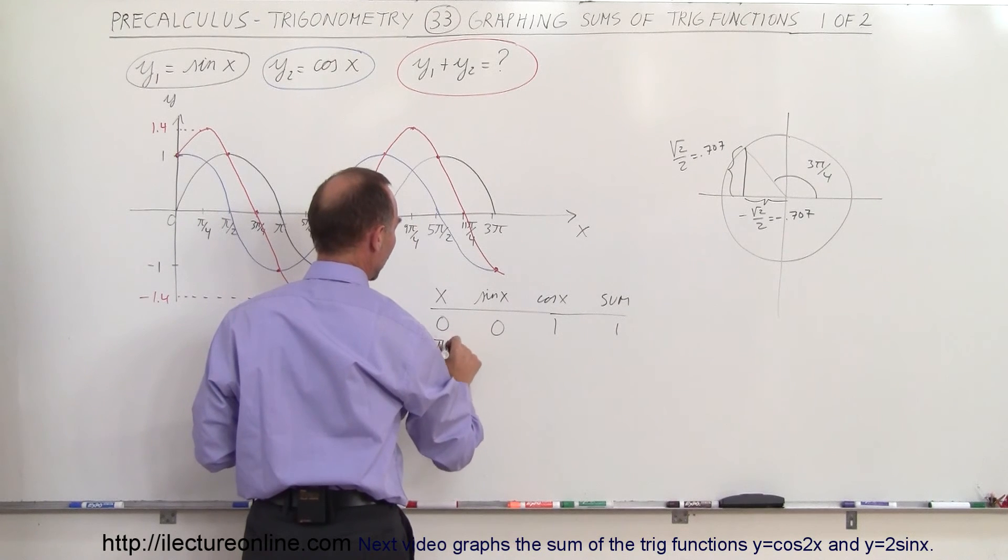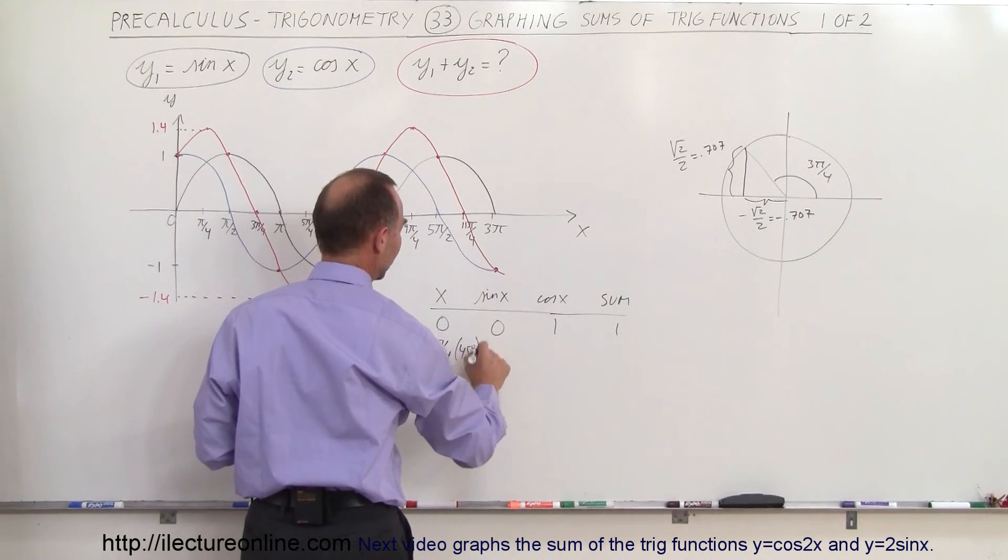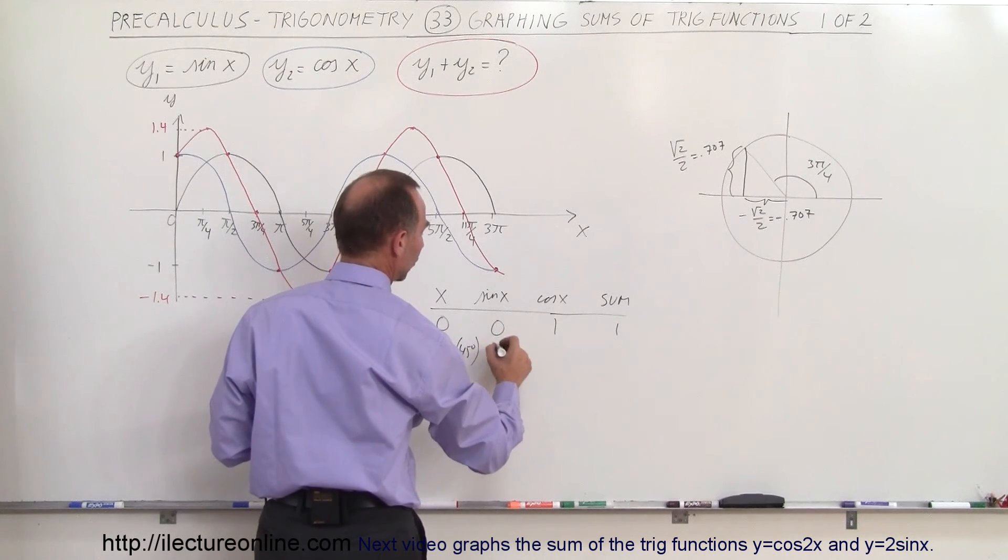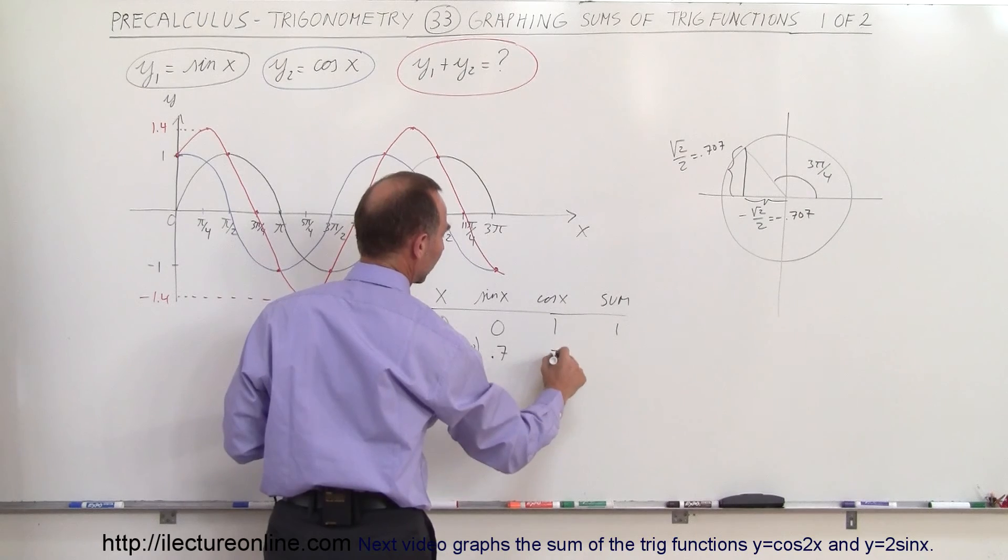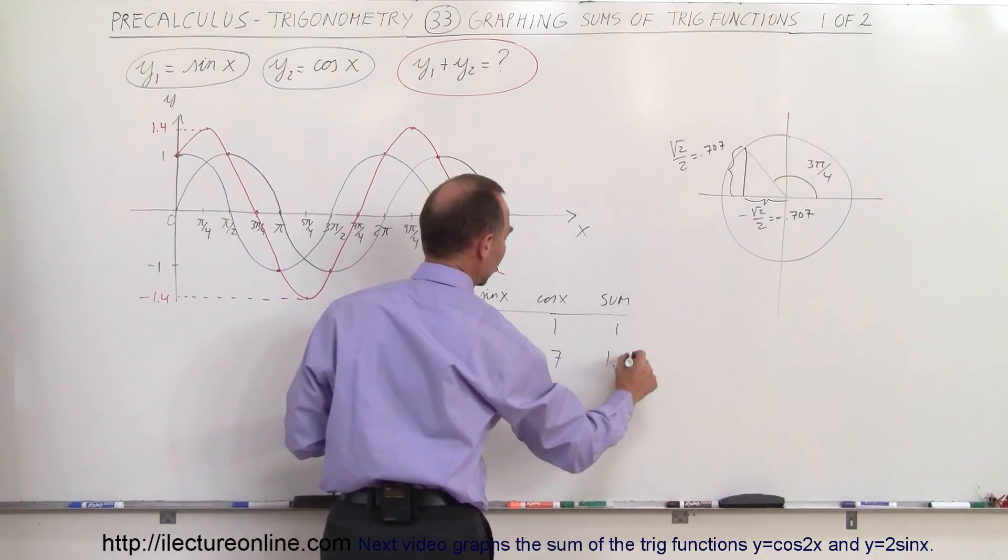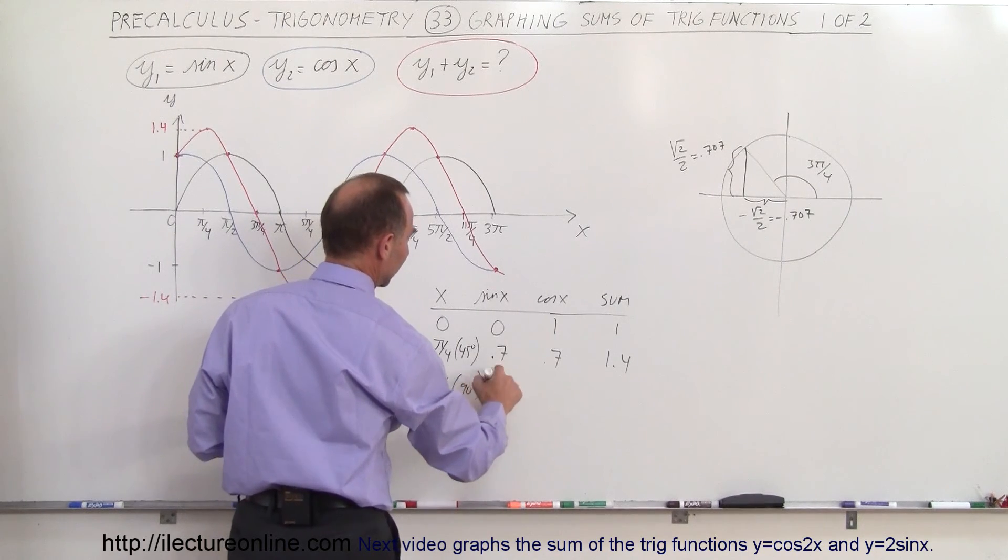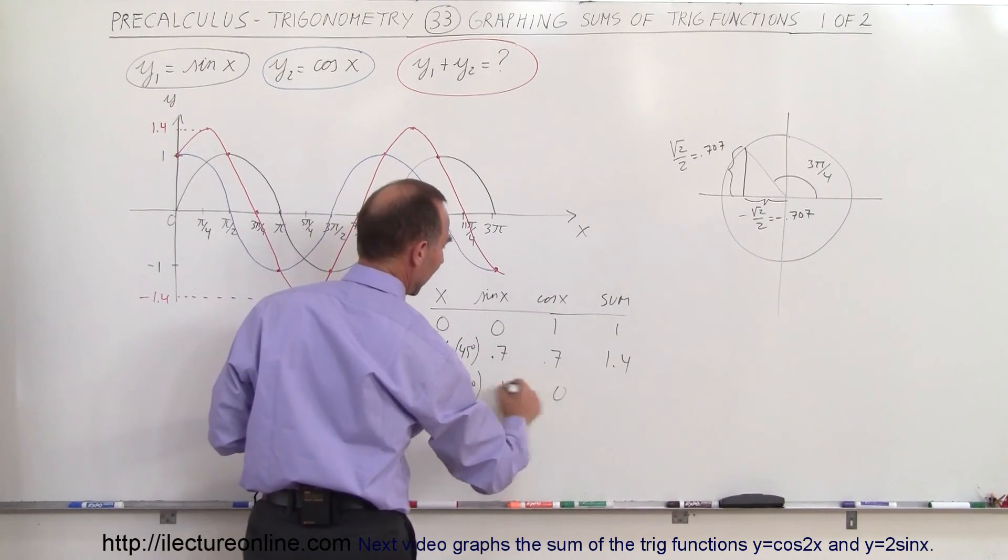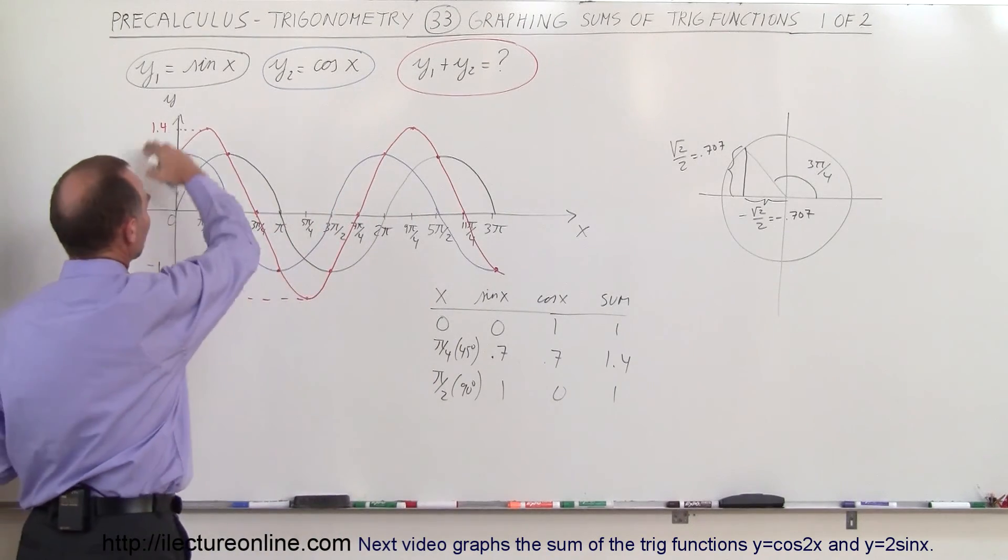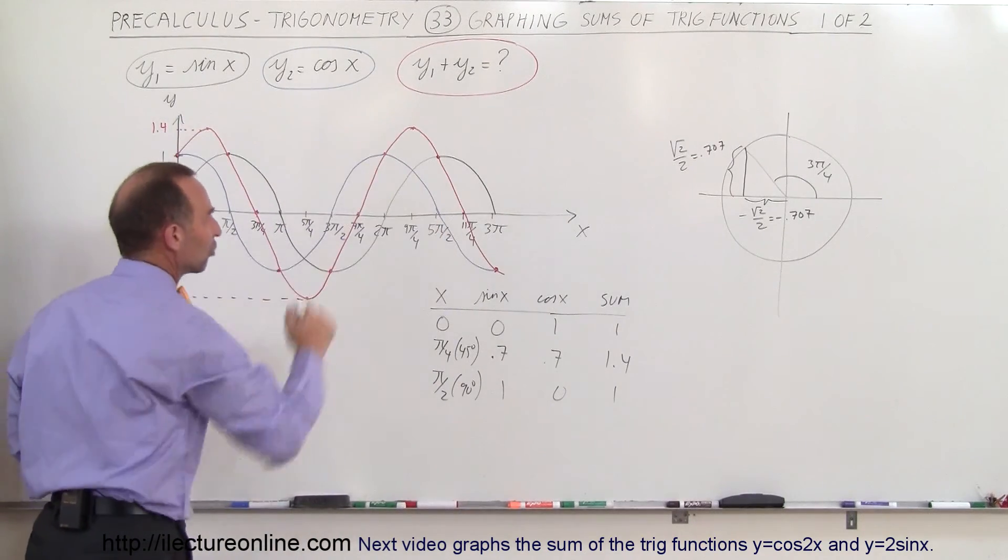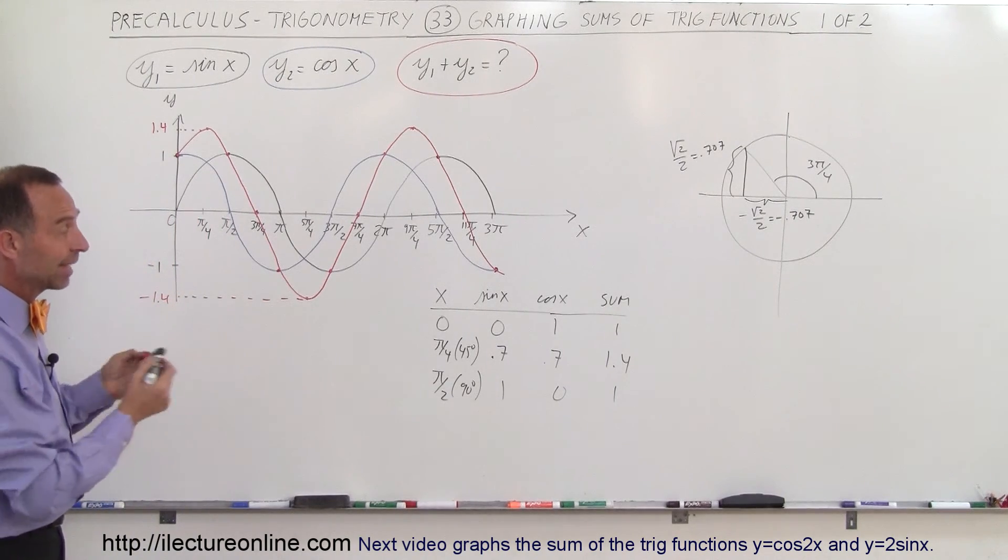When x is equal to pi over 4, that's 45 degrees, the sine of x is the square root of 2 over 2, which is 0.7. The cosine of x is square root of 2 over 2, which is 0.7. Added together, you get 1.4. At 90 degrees, pi over 2, the sine is equal to 1, the cosine is equal to 0. Add it together, you get 1. And so you can do the same thing like that. And you simply will get the overall shape of the summation of the two trigonometric functions.